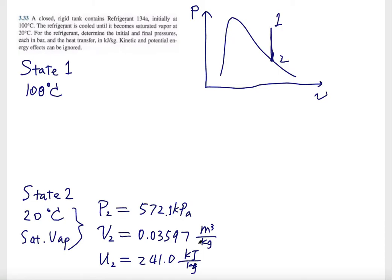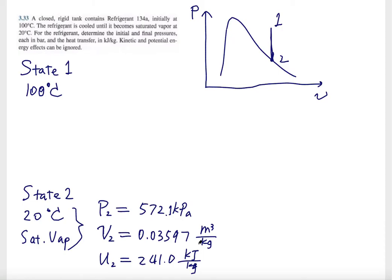At 20 degrees Celsius, because we have an isochoric process, the specific volume at condition 2 is the same as condition 1. So this is equal to 0.03597, basically 0.036 meter cubed per kilogram.